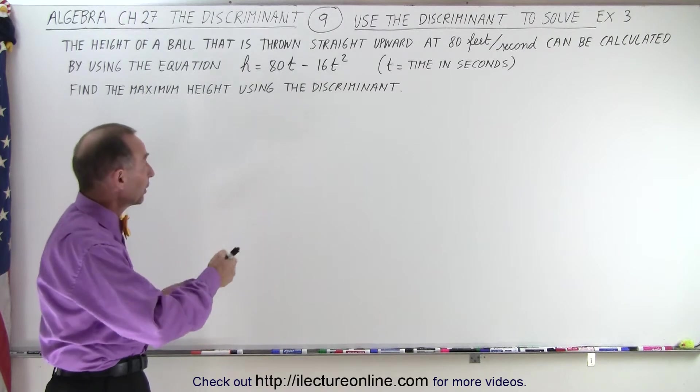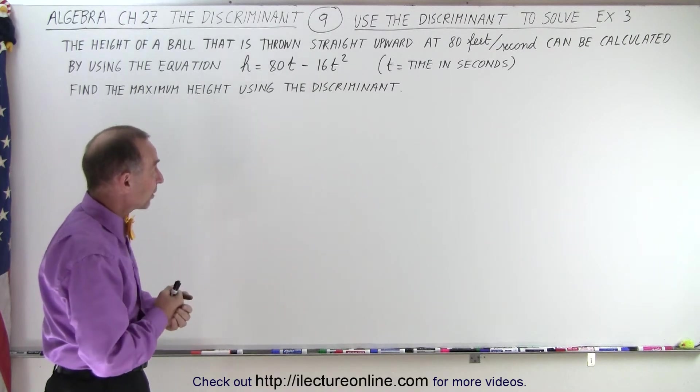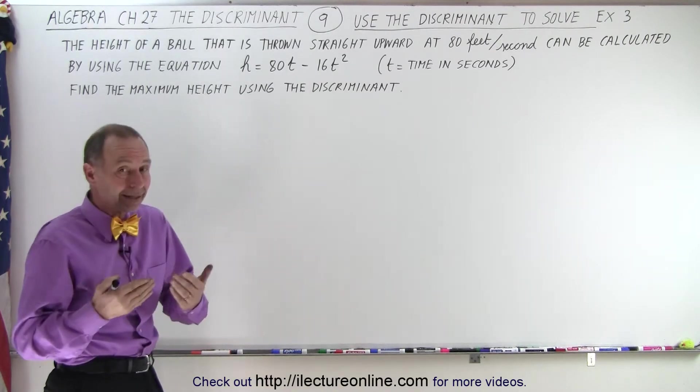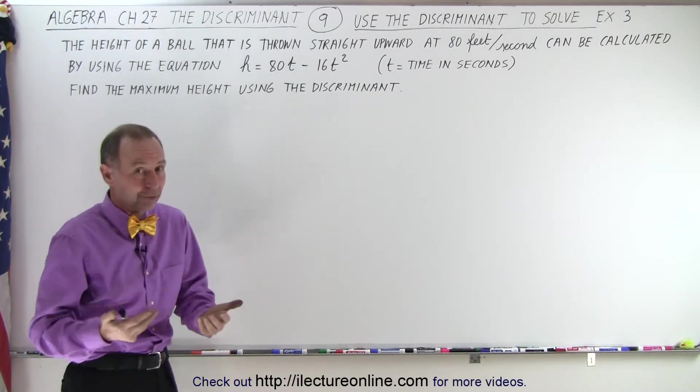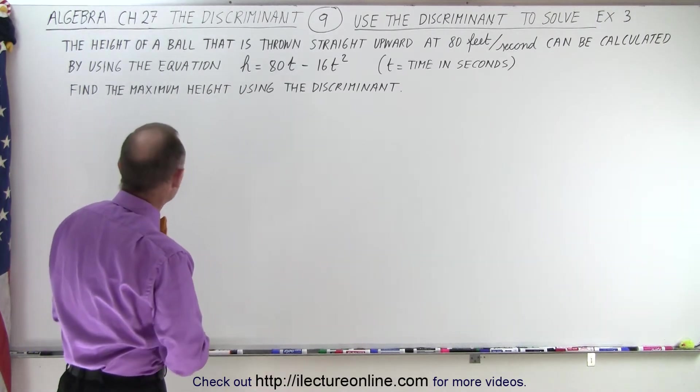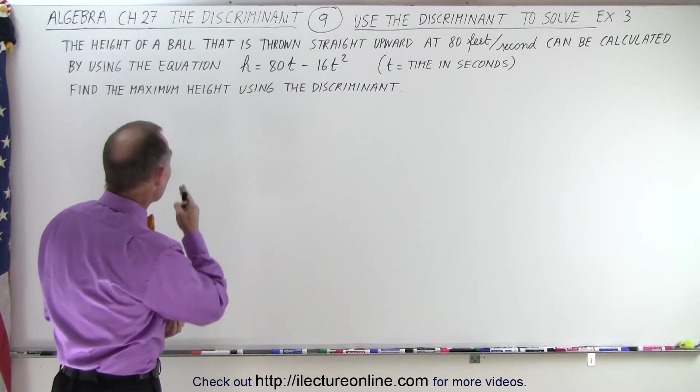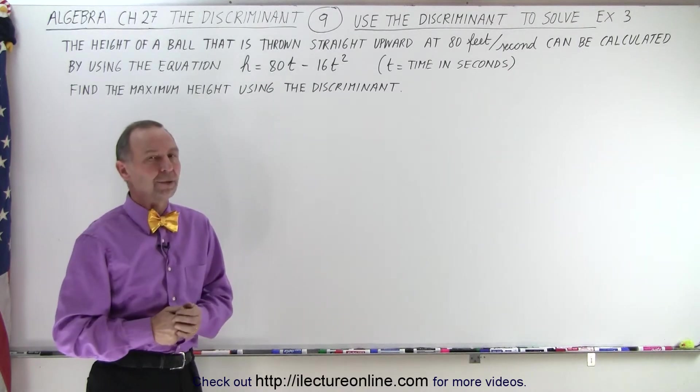Let's say that we threw a ball straight upward with an initial speed of 80 feet per second. We can calculate the height of the ball by using the equation that came from physics and Newton's laws. Then we can find the maximum height of that ball by using the discriminant.